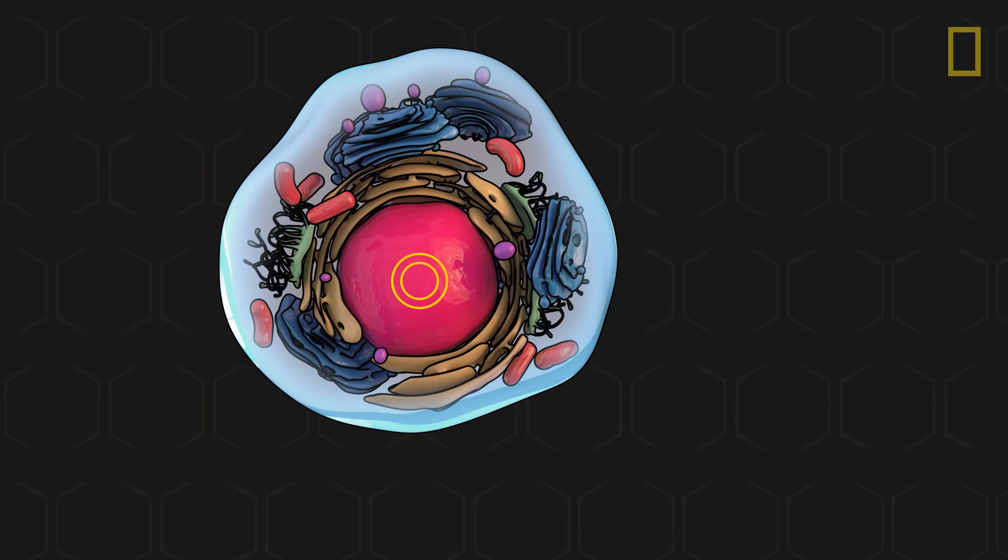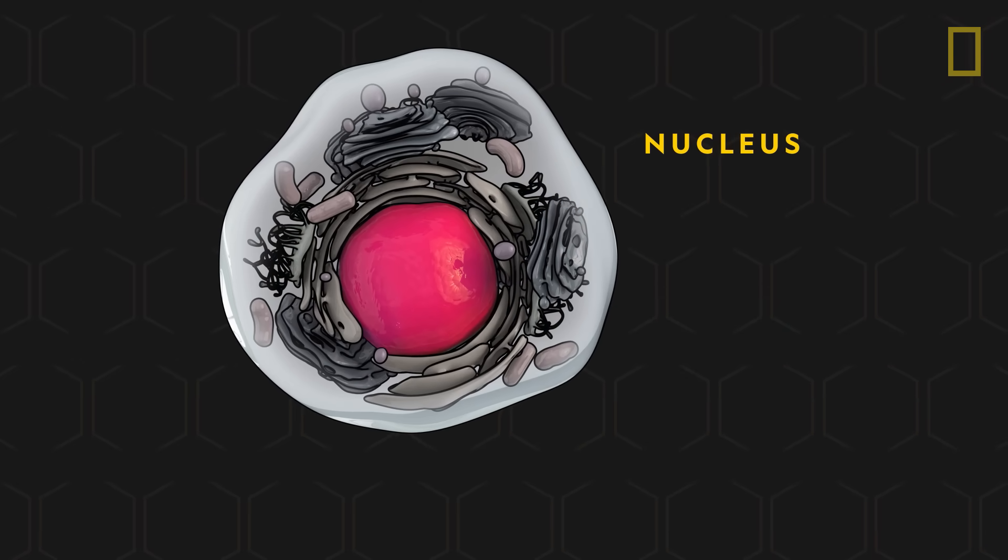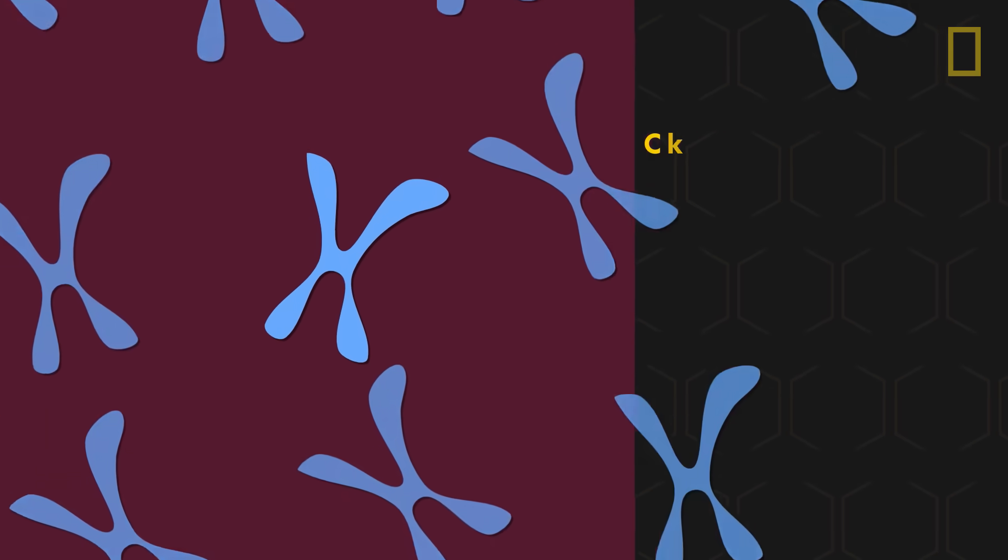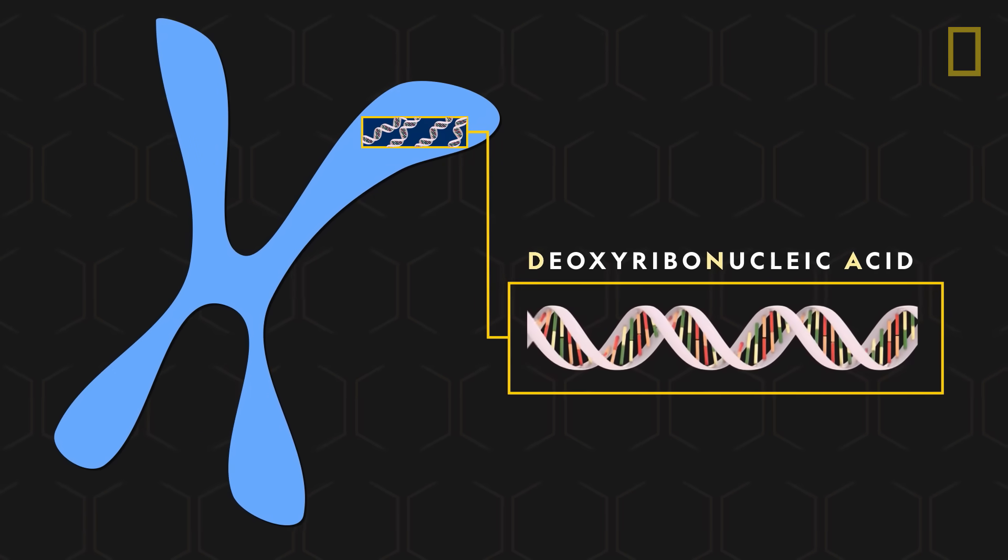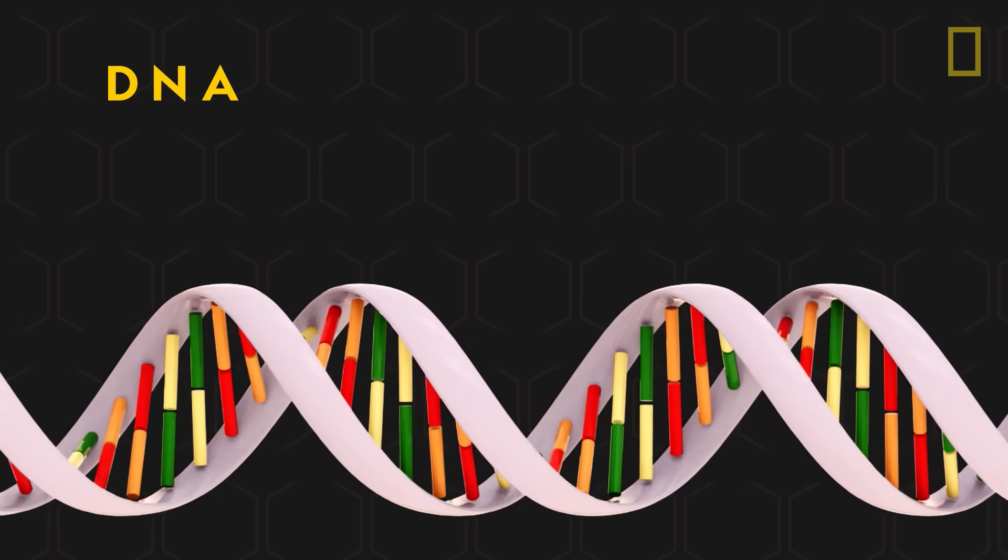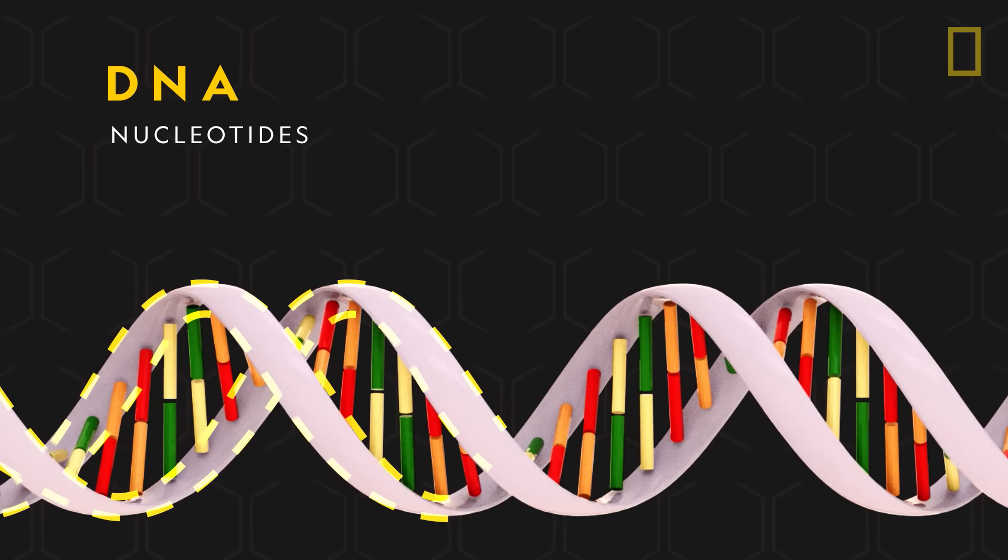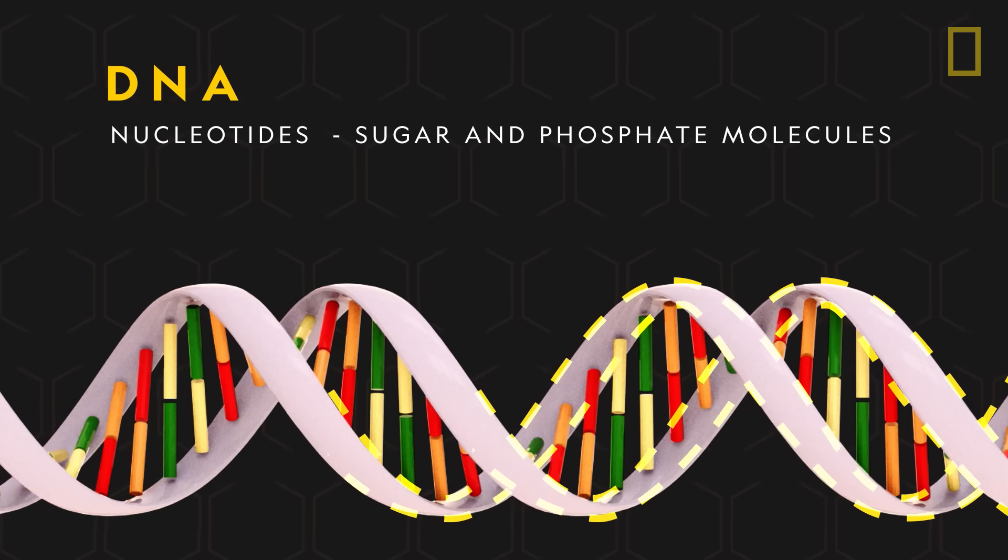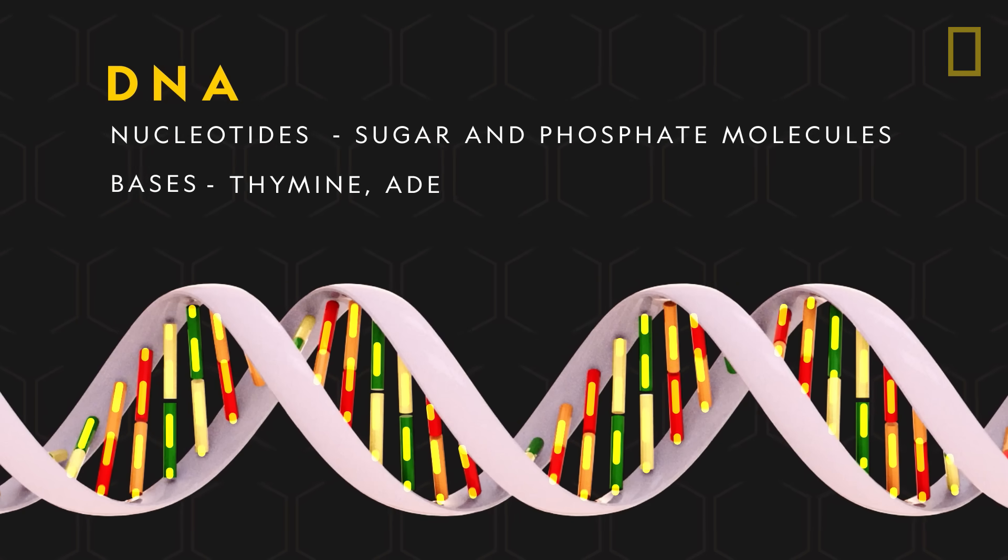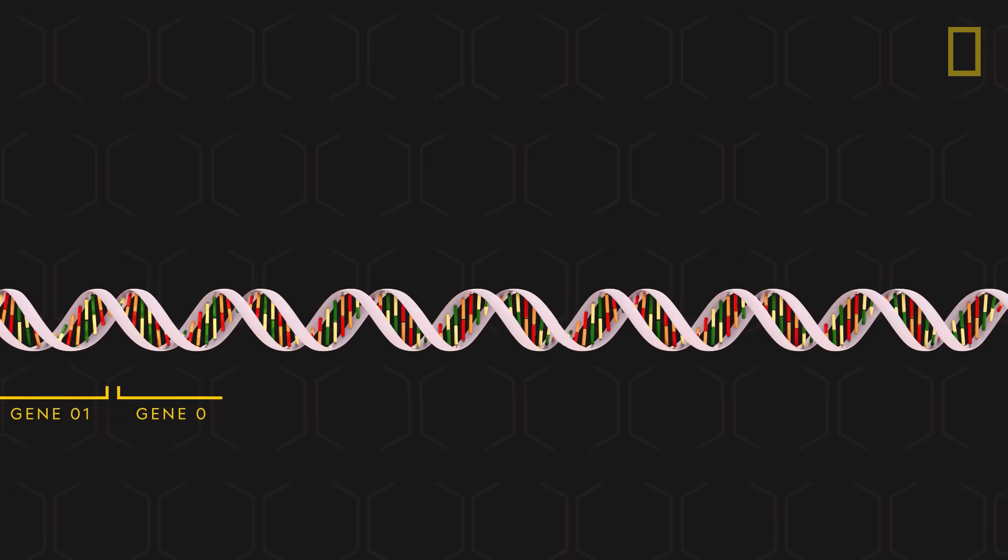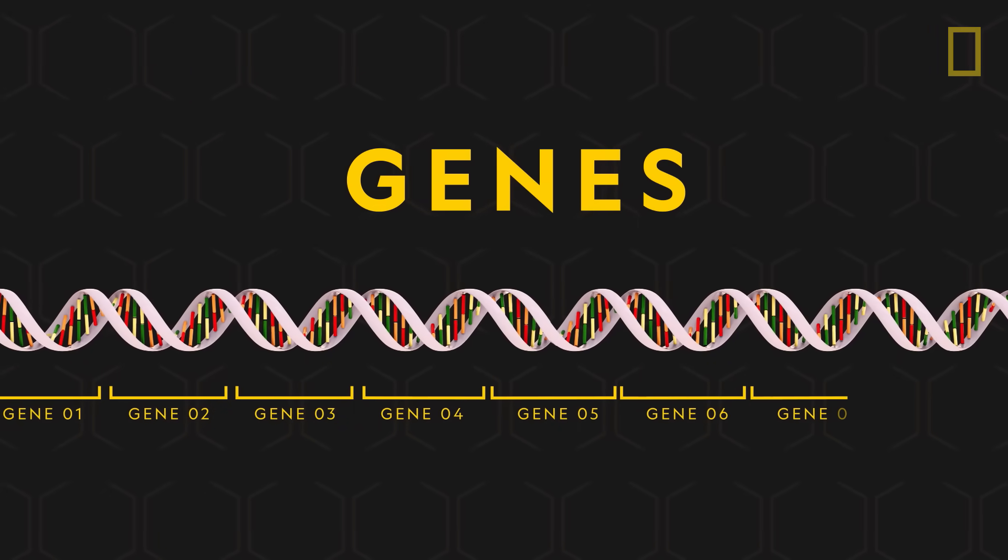Genetic information is stored in every cell's nucleus. Structures called chromosomes contain DNA. DNA is a double helix of nucleotides, chemical compounds composed of sugar and phosphate molecules, along with the bases thymine, adenine, guanine, and cytosine. These segments of DNA are what we call genes.